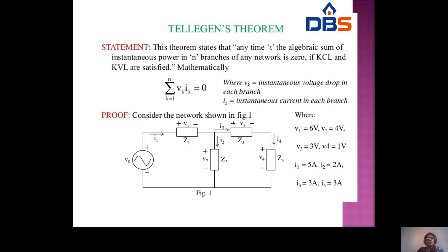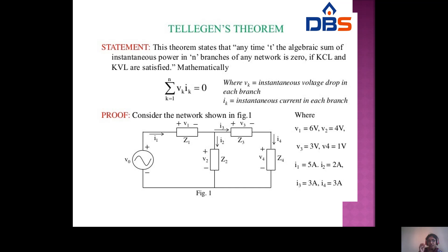Next is Tellegen's theorem, also called the 'intelligence theorem.' This theorem states that the algebraic sum of the powers in any N number of branches of a network is zero at any time T, provided KCL and KVL are satisfied. Mathematically: Σ(VK × IK) = 0, where VK is the instantaneous voltage drop and IK is the instantaneous current in each branch.